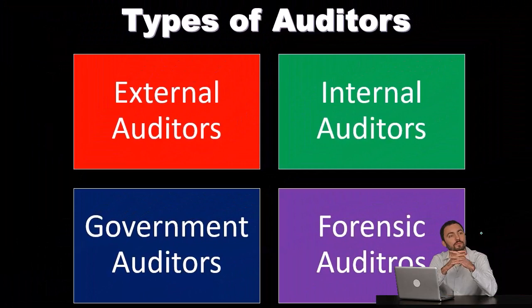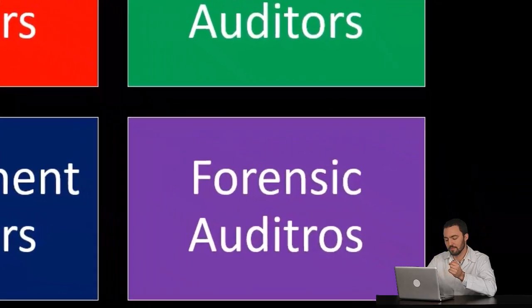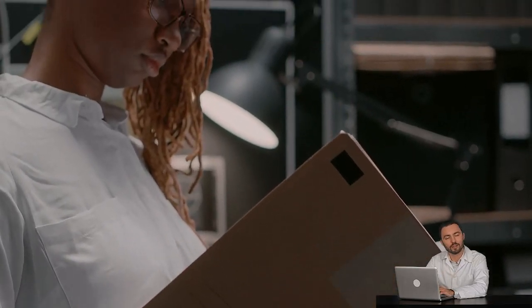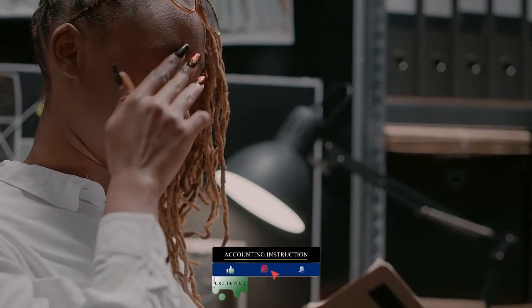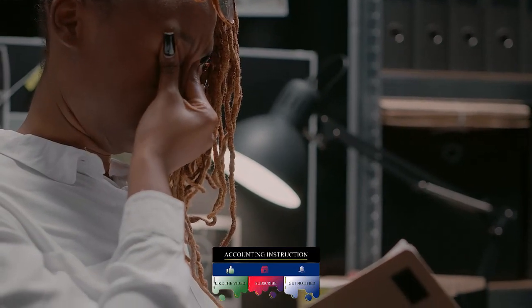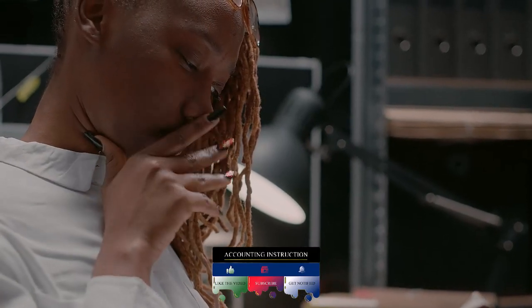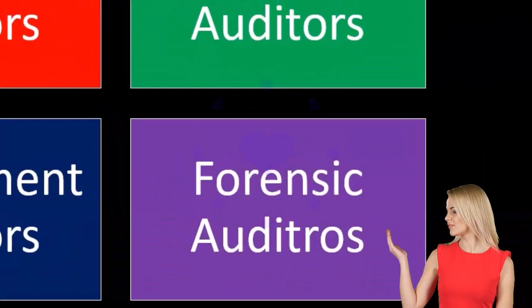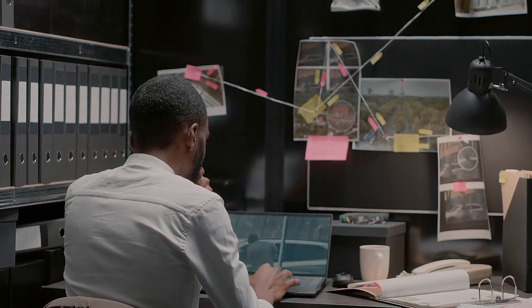And then we have forensic auditors, which is a field that has been growing, and which is more specific, focusing in on forensic areas. Their focus is more on fraud or something like that — they're typically employed to audit and look specifically for criminal-type activity. This is distinct from a normal external audit process, where we're looking for any type of material misstatement, whether caused by fraud, some error, or whatever reason. The external auditor's goal is typically to look for material misstatements to give an opinion on the financial statements, as opposed to looking specifically for matters of fraud or illegal-type activity.